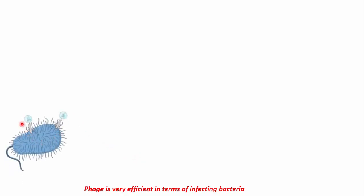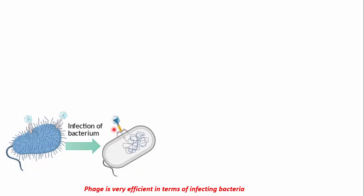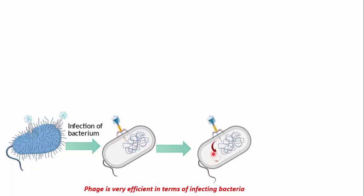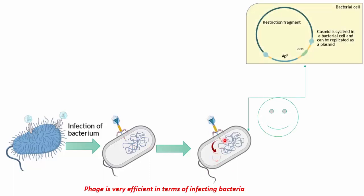Here is our bacterial cell. The phage DNA comes and attaches to the surface of the bacteria, then the phage particle injects its foreign DNA into the bacterial cell. Because of the presence of cohesive ends, it would easily circularize inside the cell. As you can see, the restriction fragments allow the cosmid to circularize in the bacterial cell and replicate as a plasmid.